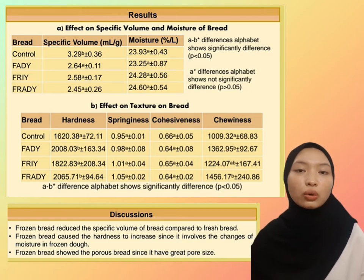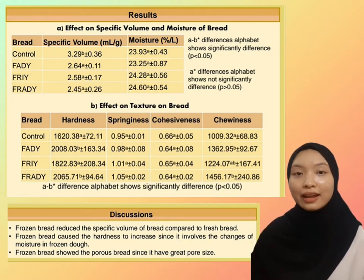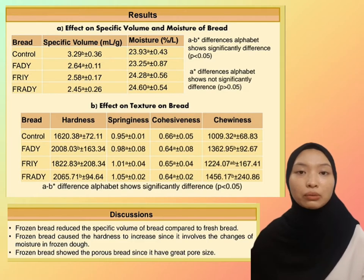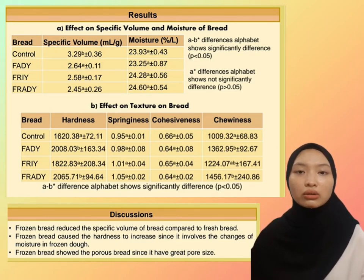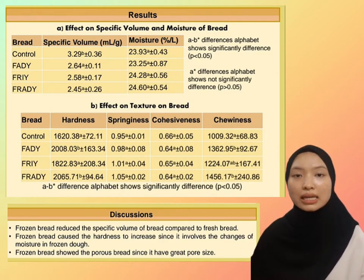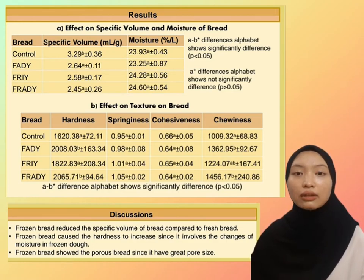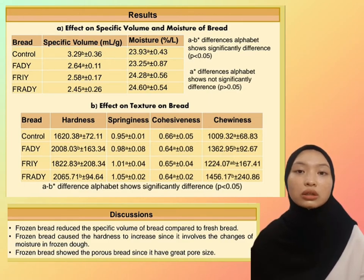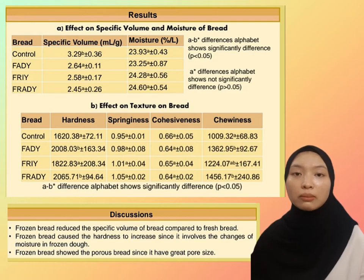The texture analysis clearly found a significant difference in terms of hardness between fresh and frozen bread made with instant yeast compared to fresh and frozen bread made with active dry yeast. Shorter proofing time was a factor that increased hardness, since proofing is linked with carbon dioxide production, and bread made from active dry yeast required longer proofing time. Frozen bread also caused hardness to increase due to moisture changes in frozen dough, as the starch was damaged during frozen storage and moisture diffused away from the gluten matrix.